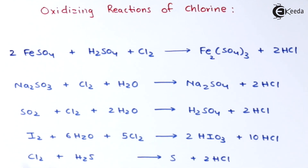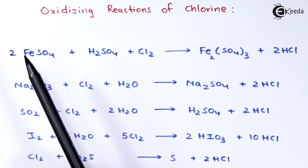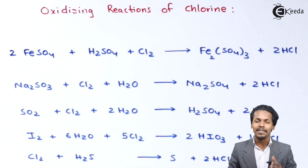The last reaction: whenever Cl₂ is treated with hydrogen sulfide (H₂S), the product we get is sulfur along with 2 moles of HCl. These are all the oxidizing reactions of chlorine that we have discussed.